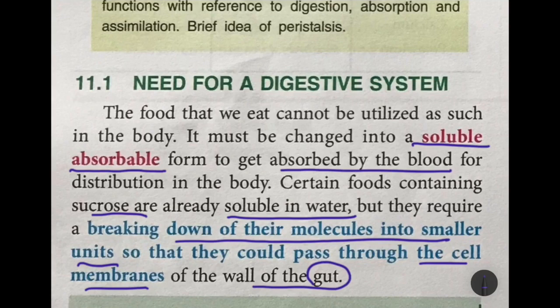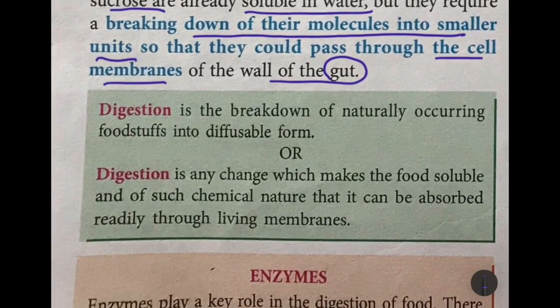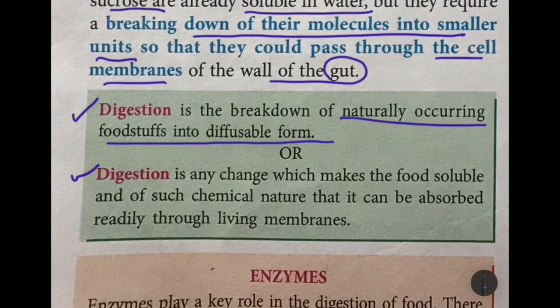Now talking about the definition — you can write either of these definitions, whichever you find easy. The first definition reads: digestion is the breakdown of naturally occurring foodstuffs into diffusible form, meaning a form which can easily move through the walls of the intestine into the blood and be carried to each and every cell of the body. The second definition: digestion is any change which makes the food soluble and of such chemical nature that it can be readily absorbed through the living membranes.